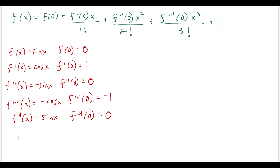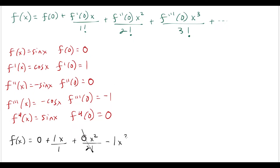Now we plug into the expanded formula. We have f of x equals 0 plus 1 times x over 1 factorial, which is just x. Then the second derivative at 0 is 0, so that term wipes out. The third derivative at 0 is negative 1, so we get minus x cubed over 3 factorial. The next term is plus x to the fifth over 5 factorial, and then minus x to the seventh over 7 factorial. So this is an alternating series with only odd powers.